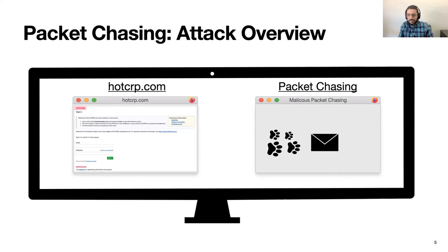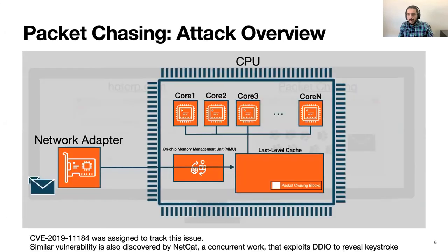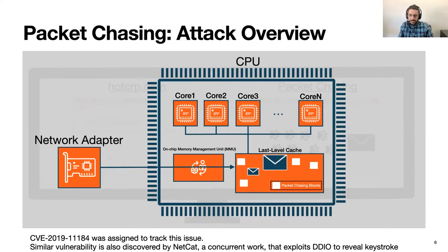The Packet Chasing attacker in this scenario detects the successful login of HotCRP without having access to the network packets — only by monitoring activity on the last-level cache. When accessing a web page, a series of packets with different sizes will be sent, and that sequence of packet sizes constitutes a footprint that is relatively unique to that website. What happens behind the scenes is that Packet Chasing intelligently probes cache locations that have a high chance of being filled by an incoming packet, and based on evicted blocks can detect the arrival of packets and, more importantly, their sizes.